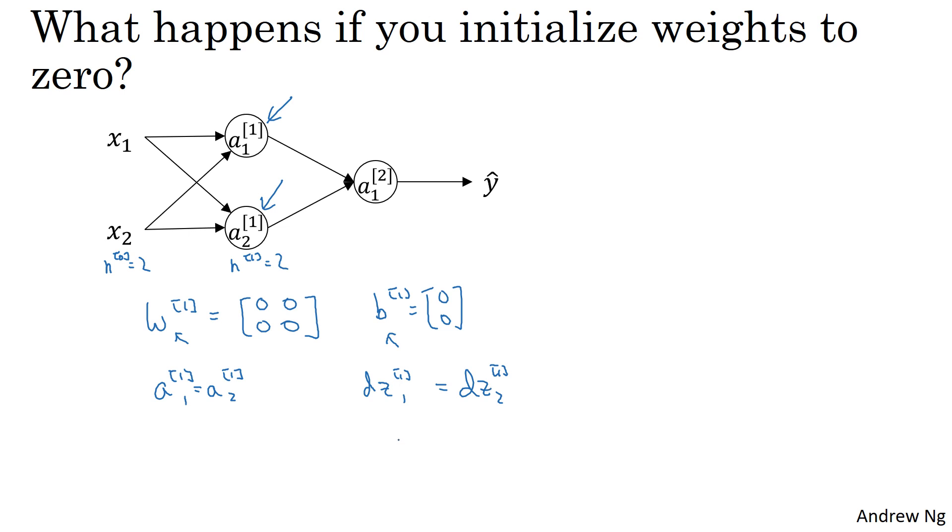Technically, for what I'm saying, I'm assuming that the outgoing weights are also identical, so that w2 is equal to 0, 0. But if you initialize the neural network this way, then this hidden unit and this hidden unit are completely identical. They're completely symmetric, which just means that they're computing exactly the same function. And by kind of a proof by induction, it turns out that after every single iteration of training, your two hidden units are still computing exactly the same function.